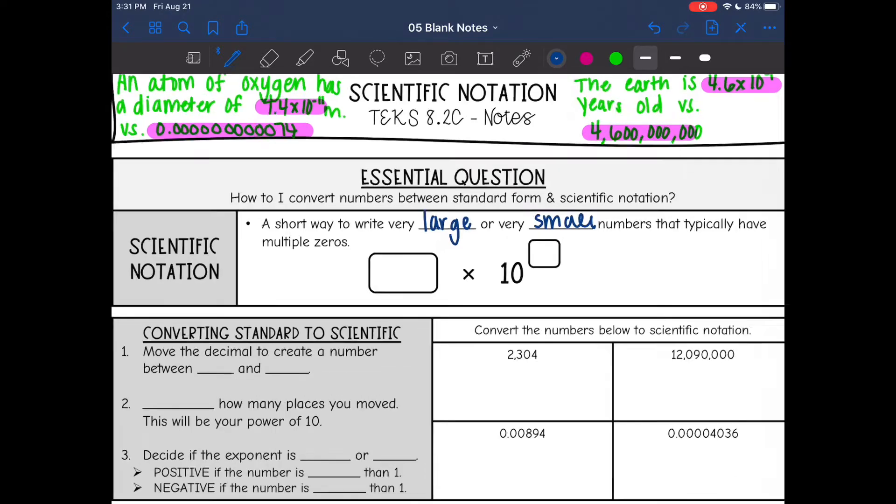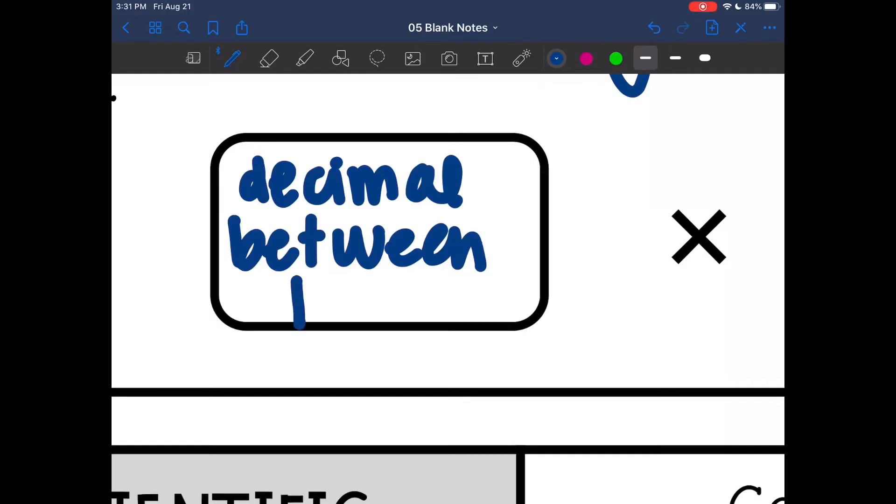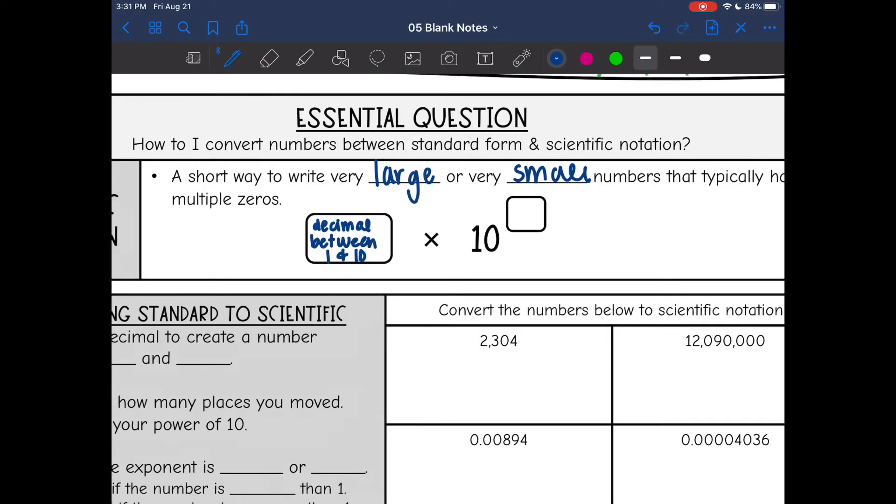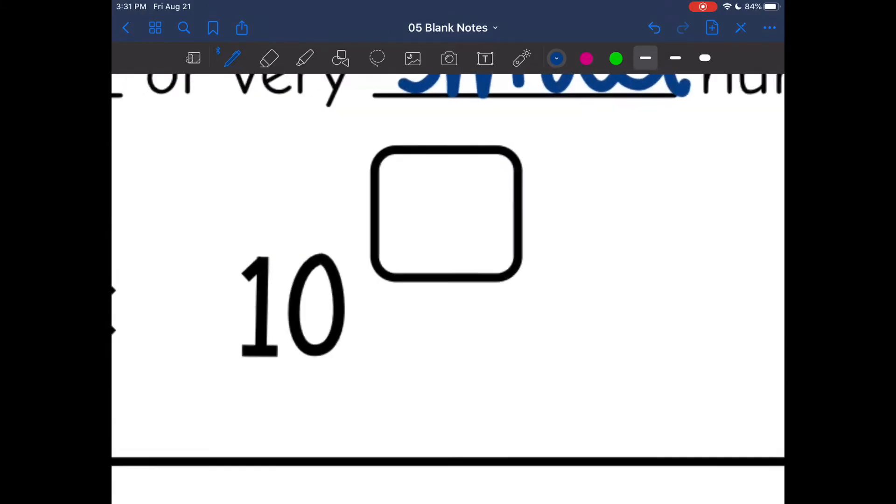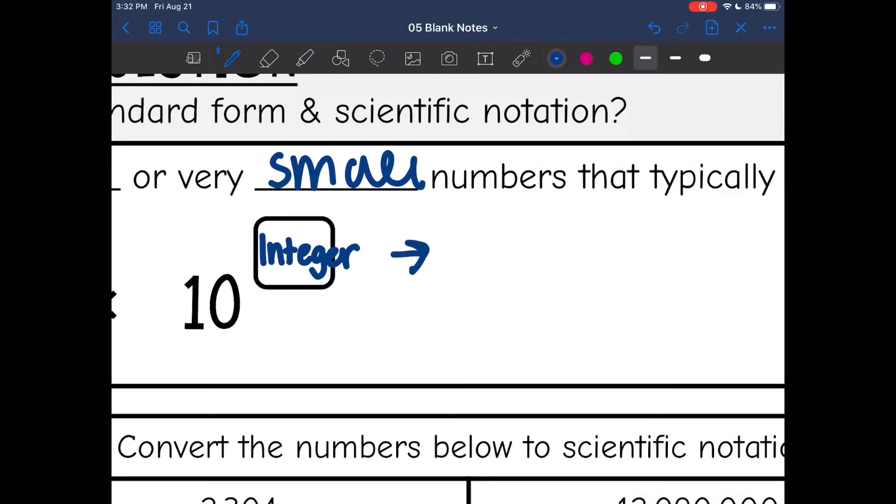So this first number right here is going to be a decimal between one and 10. So this number right here before we multiply it by 10 will always be a decimal between one and 10. And then the exponent is always an integer. And if you remember from our previous lesson, that means a positive or negative whole number.